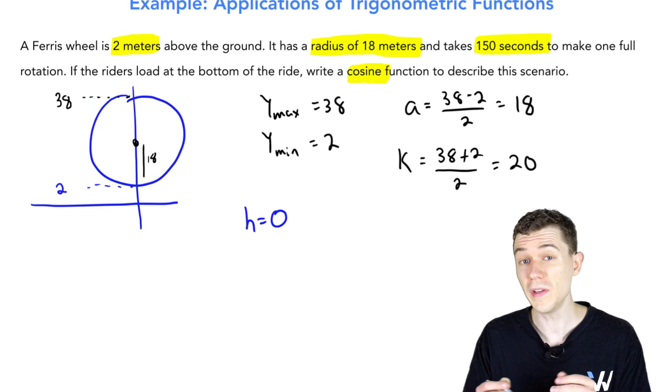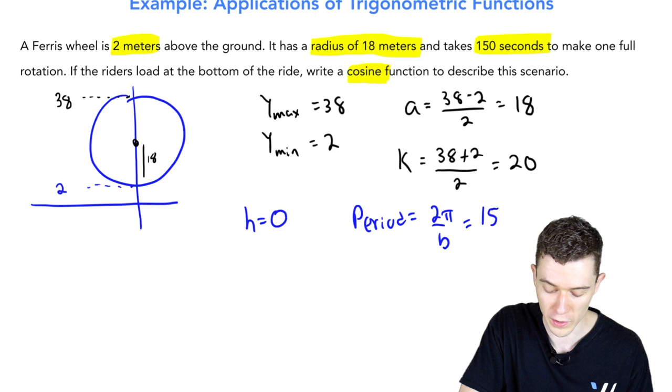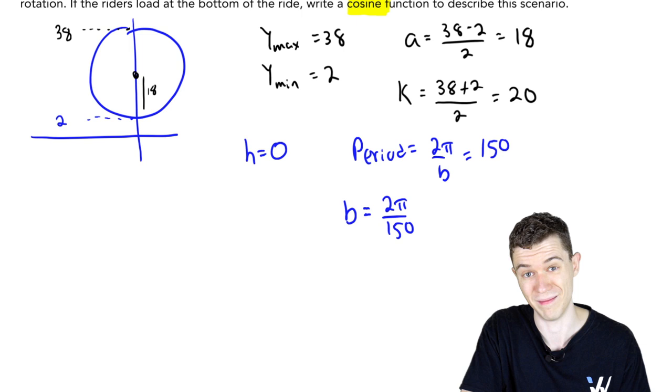The only thing missing is b. Typically we say that the period is 2 pi over b for sine and cosine. Here the period, one full rotation, is 150 seconds. Let's just solve for b. We could multiply by b and divide by 150 to get b as 2 pi over 150. We actually have everything we need.